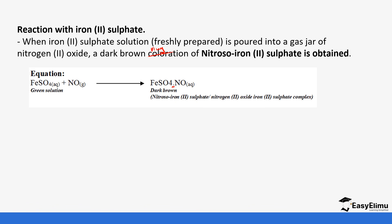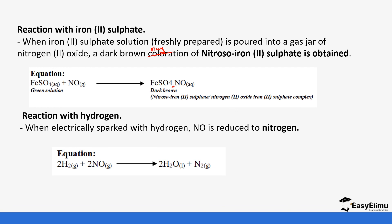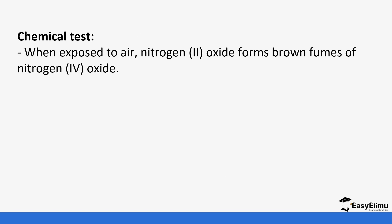It also reacts with hydrogen when you spark it, and when it reacts with hydrogen it is reduced to nitrogen gas. Hydrogen with nitrogen (II) oxide forms water and nitrogen gas is produced. Some of the chemical tests: it forms brown fumes when exposed to air because it's oxidized by oxygen to form nitrogen (IV) oxide which is brown in color.